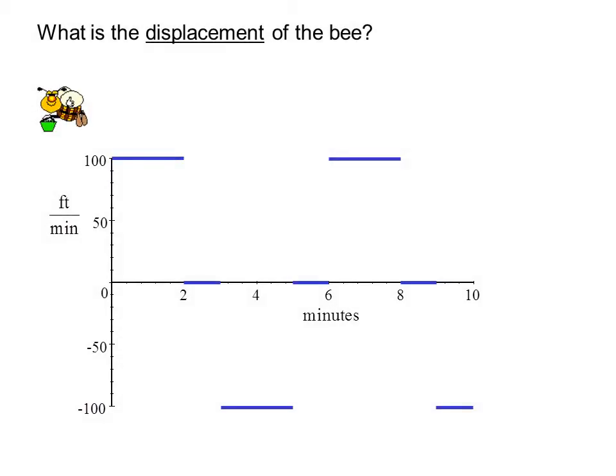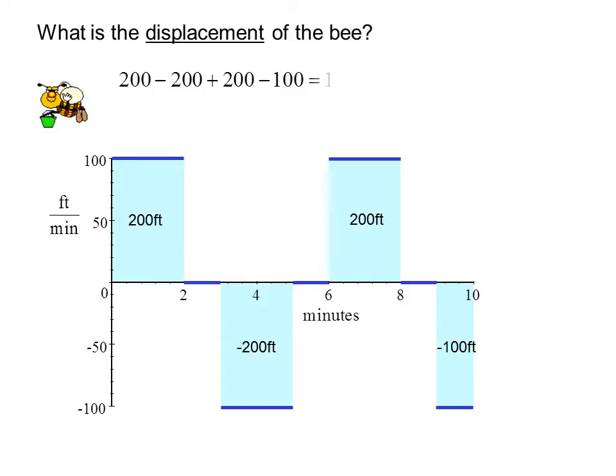What is the displacement of the bee? Once again we have 200 feet, and then 200 feet back, and then 200 feet back, and then 200 feet, and 100 feet back. But this time we have to count the return trips as negative. So we have 200 minus 200 plus 200 minus 100, or 100. So our bee ends her short life 100 feet from the hive.